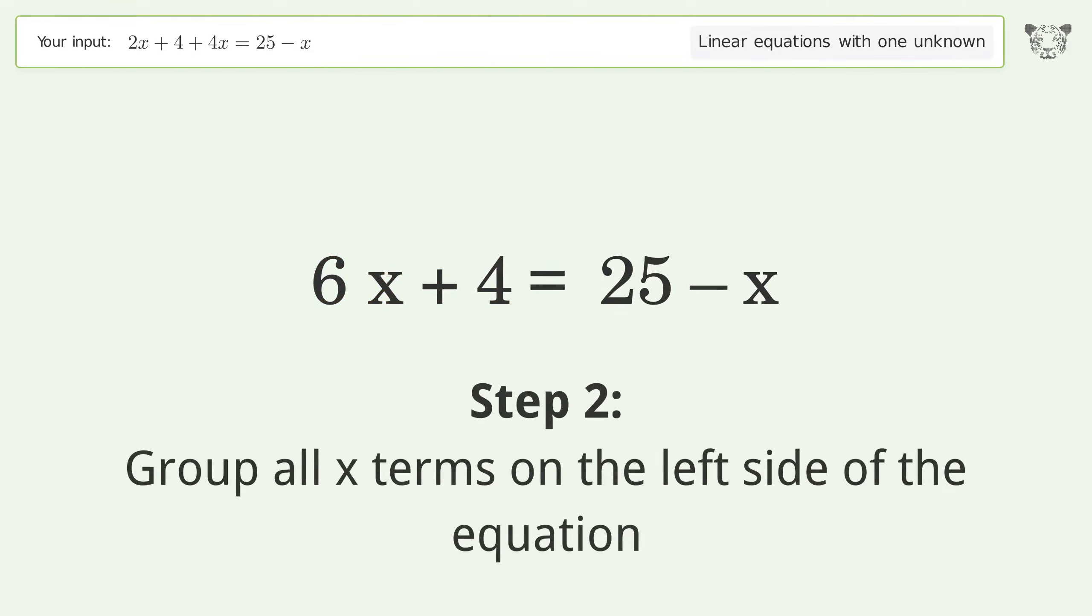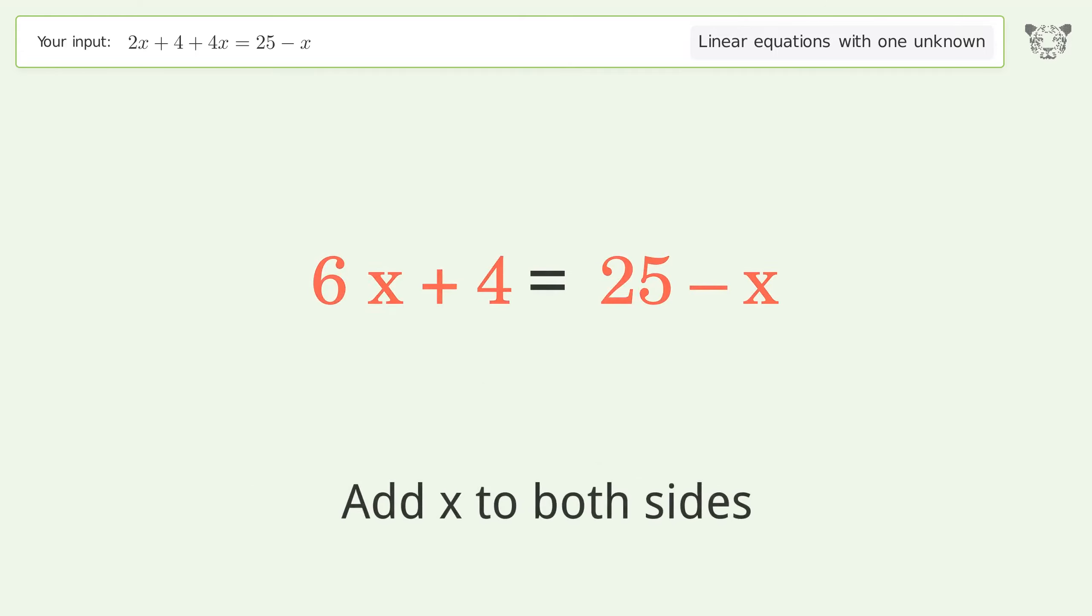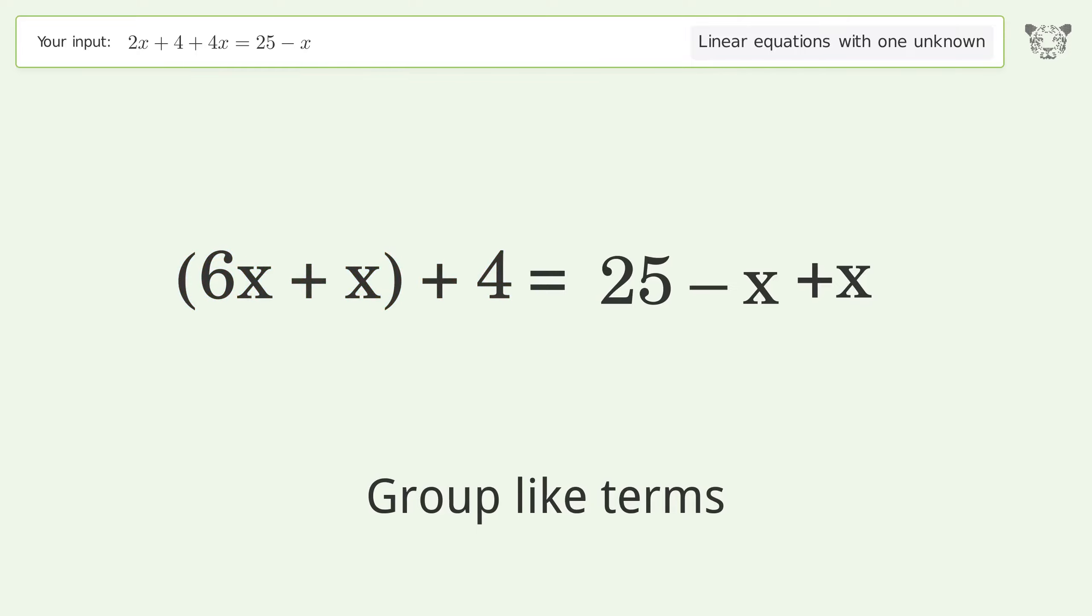Group all x terms on the left side of the equation. Add x to both sides, group like terms, and simplify the arithmetic.